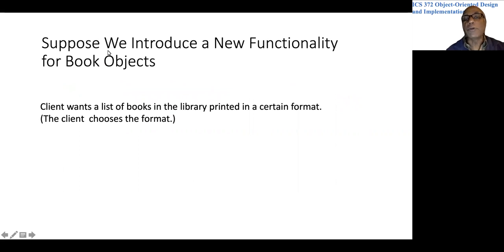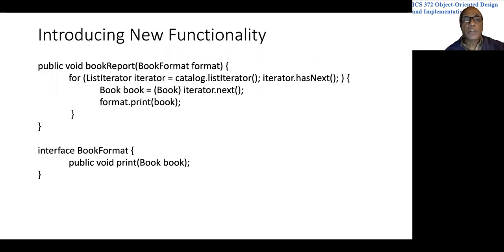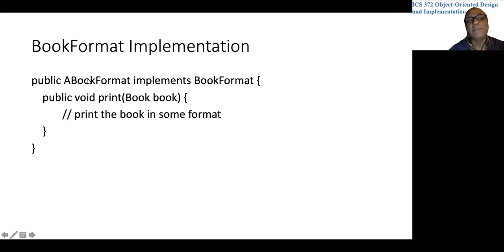Let's assume that we want to introduce a new functionality for book objects on our first implementation of the library system. Let's say that we want to print the books in a certain format. We have an interface that specifies that books should be printed in a certain format — a very simple interface with a method called print. Given a book, it will print the book. The format can be specified by the implementer of this interface, so I can have multiple classes that implement BookFormat.